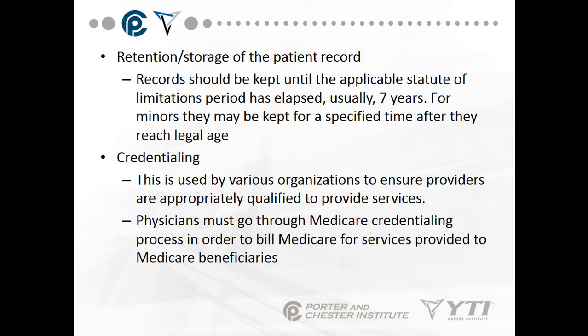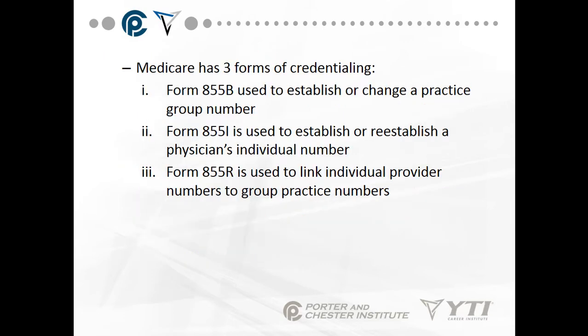Credentialing is used by various organizations to ensure providers are appropriately qualified to provide services. Physicians must go through the Medicare credentialing process in order to bill Medicare for services provided to Medicare beneficiaries. Medicare has three forms for credentialing: Form 855B is used to establish or change a practice group number; Form 855I is used to establish or reestablish a physician's individual number; and Form 855R is used to link an individual provider number to a group practice number.